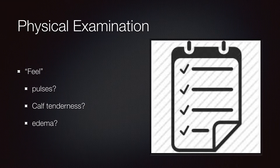You also want to feel and see if the patient has pulses. If they don't have pulses, it might indicate an aortic dissection. Do they have calf tenderness? Patients who have deep venous thromboses can develop a pulmonary embolism, which can also lead to chest pain. Do they have edema in their legs? You want to evaluate the extremities and do a pinpoint examination.